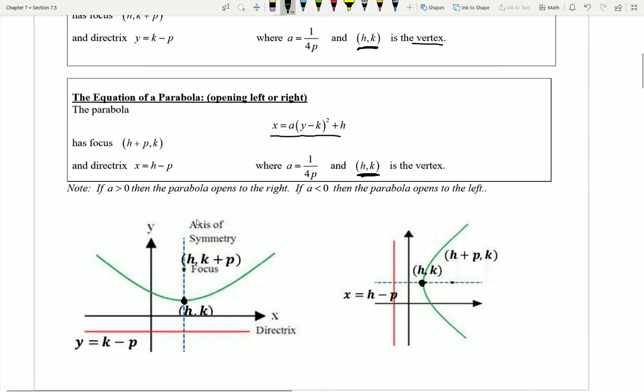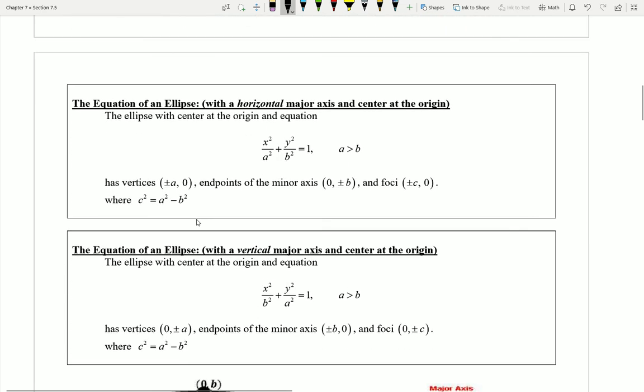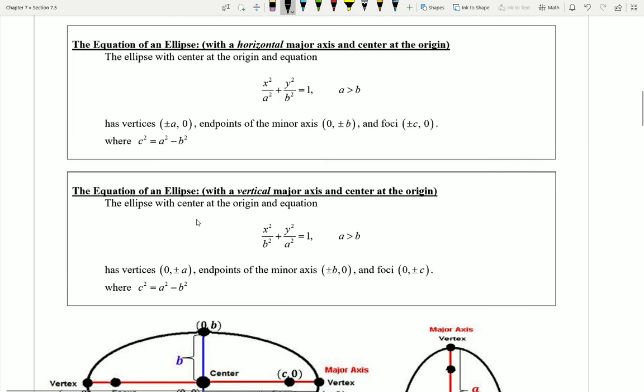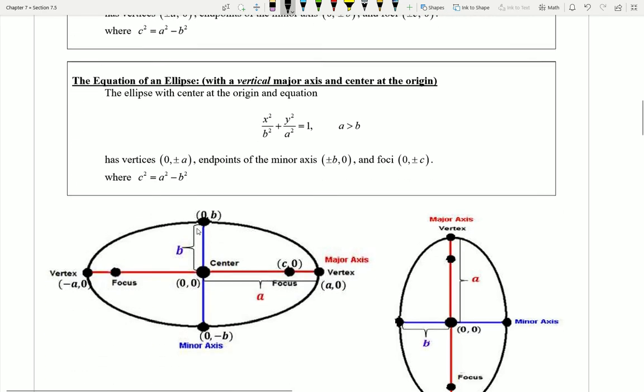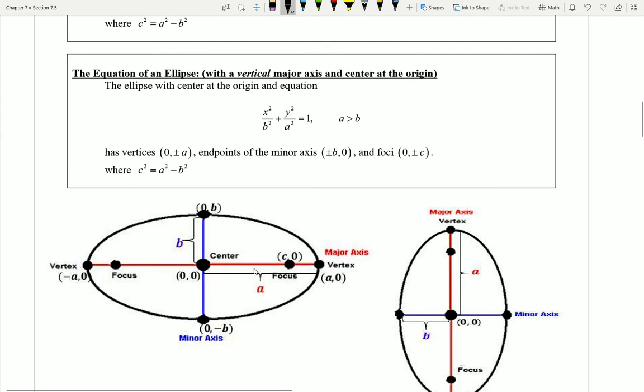So this is a quick flyby of a parabola. Let's take a look then at the next conic section, an ellipse or an oval type shape. We'll see down below that there are going to be two different types of ovals that we're going to be dealing with: ones that are stretched more in a horizontal direction, and ones that are stretched more in a vertical direction.